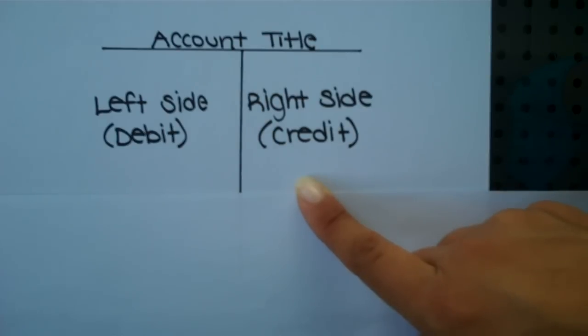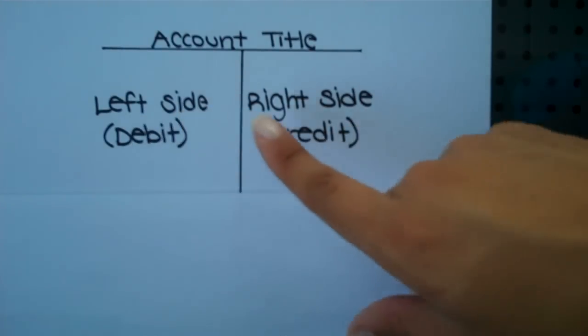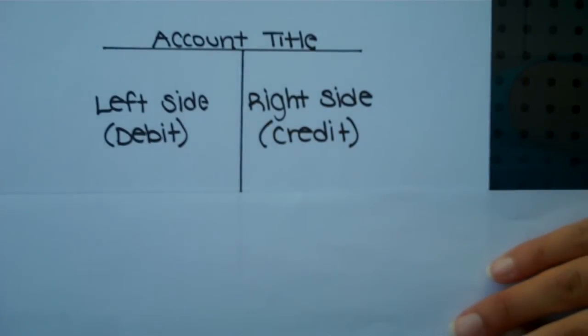Or in accounting speak, we have a debit side and a credit side. And in this class, debit and credit simply mean left and right. So I don't want you to confuse those terms with ones that you may have already learned in other classes or just by being a consumer.